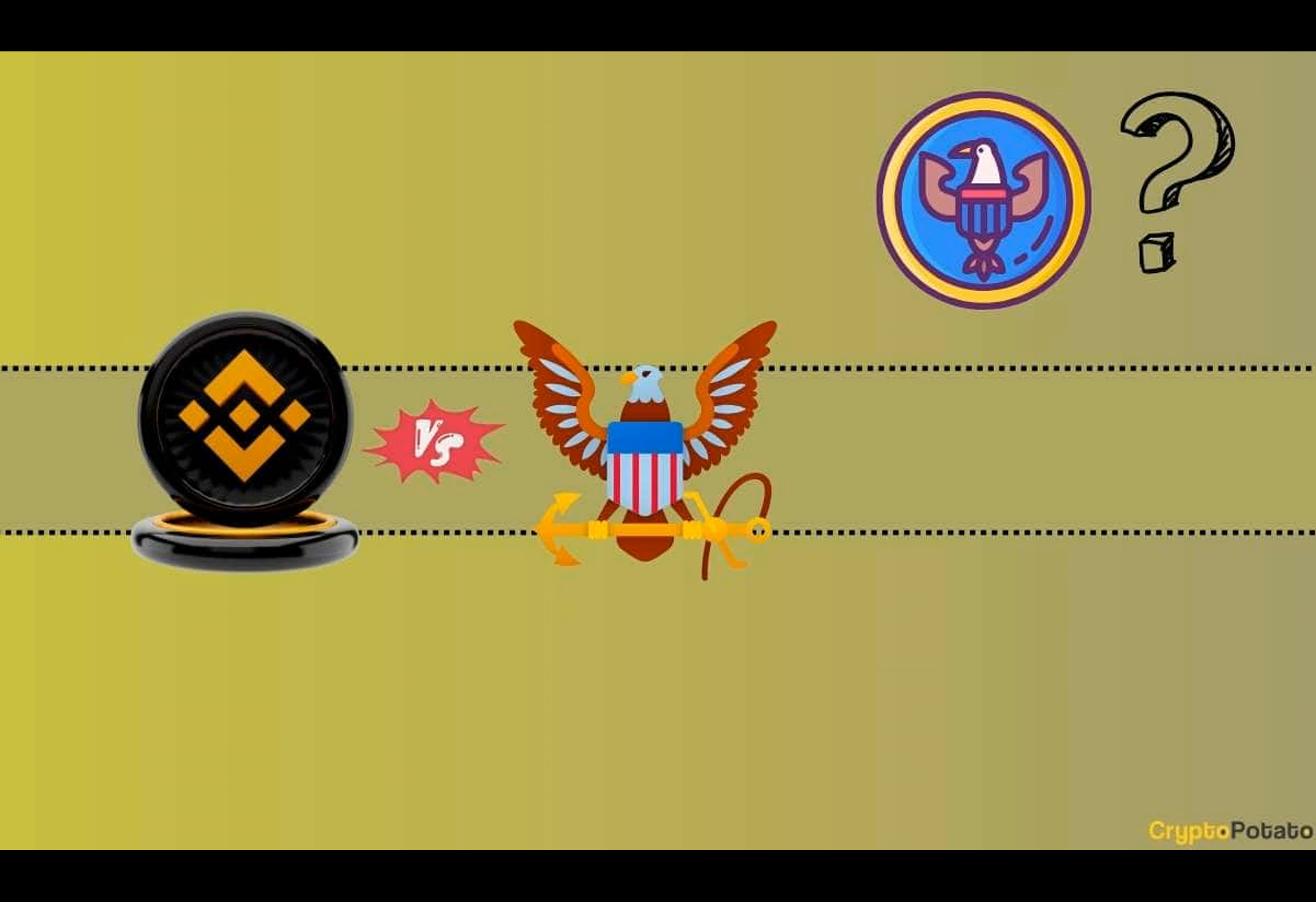Binance faced a $4.3 billion DOJ fine for anti-money laundering issues with CEO Changpeng Zhao resigning. Ripple's Chief Legal Officer Stuart Alderoti views this positively for crypto compliance, noting the SEC's absence in the determination.